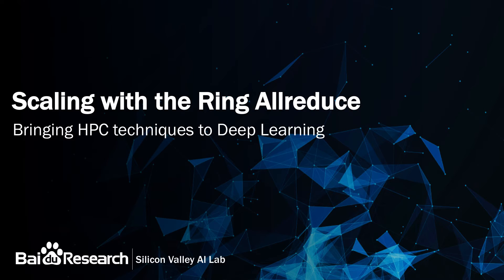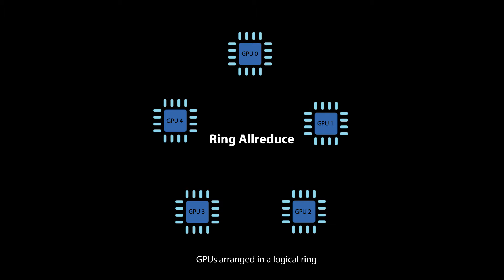Hello, my name is Andrew Gibiansky and I'm a research scientist at Baidu's Silicon Valley AI Lab. Today I'd like to introduce you to a technique that allows you to scale deep learning models more effectively. Neural networks have grown in scale over the past several years and training them can require massive amounts of data and computational resources. To provide these computational resources, we scale our models to dozens of GPUs using a technique called the ring all-reduce, which is common in high-performance computing but underused in deep learning.